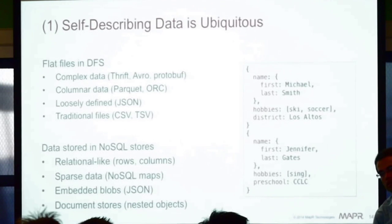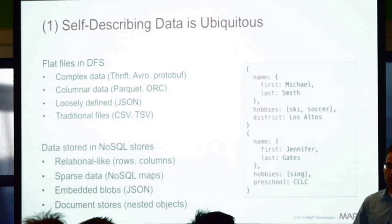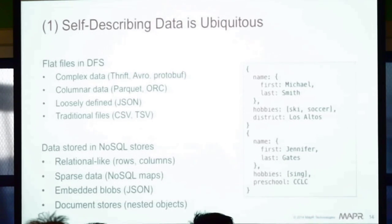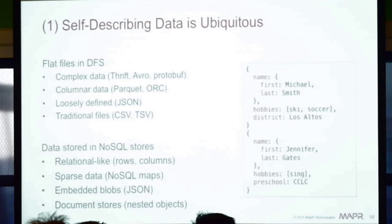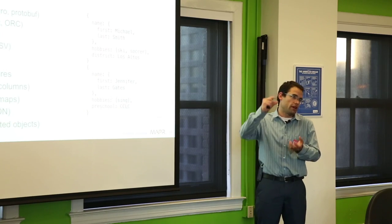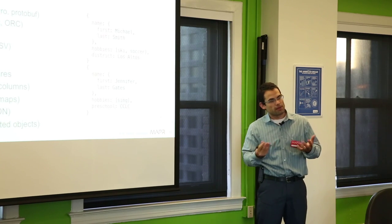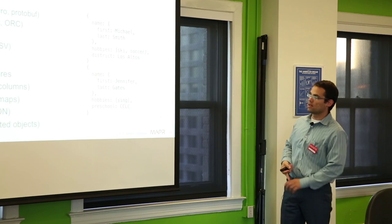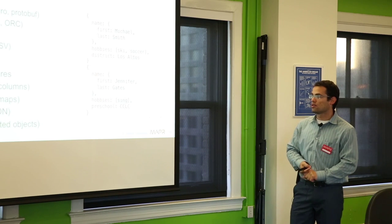Three things enable us to accomplish this. First, self-describing data is ubiquitous. Most Hadoop and big data environments store data — whether in flat files or NoSQL databases — that is self-describing in nature. Formats like Thrift, Avro, or Google Protocol Buffers have a schema already there with the data. Columnar formats like Parquet and ORC also have schema information embedded. JSON files have field names right in the file so you can see the column names and data types.